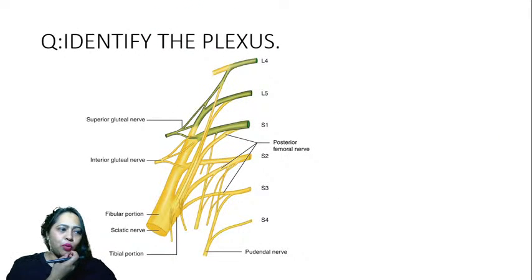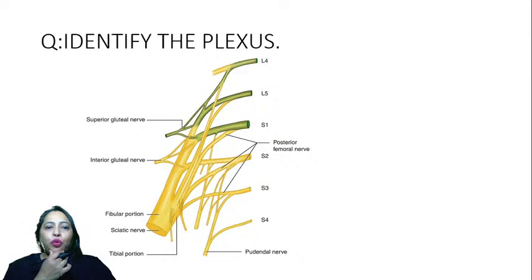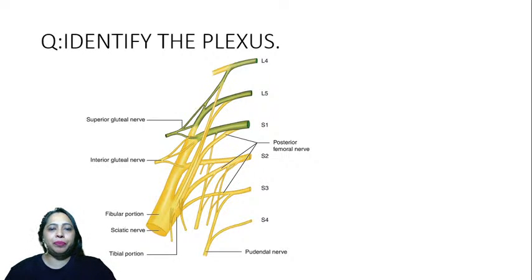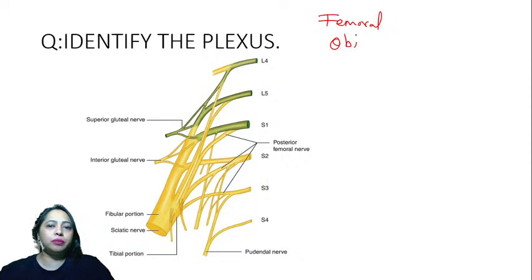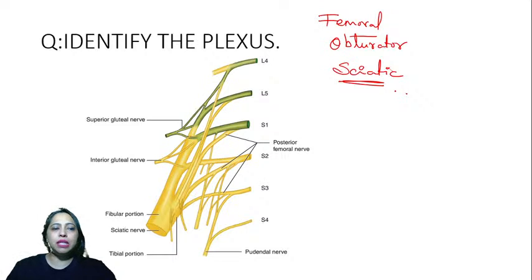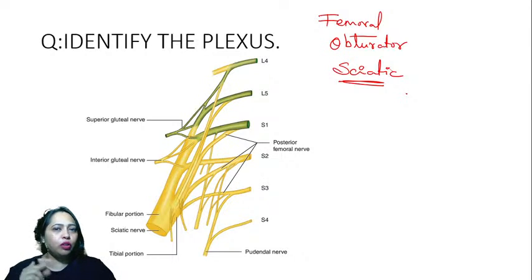First question: identify the plexus. You can see L4, L5, S1, S2, S3, S4 and the big sciatic nerve. Let's figure out the root values of femoral and obturator nerves. It is the lumbosacral plexus — you can see all the nerves including femoral, obturator, and sciatic.